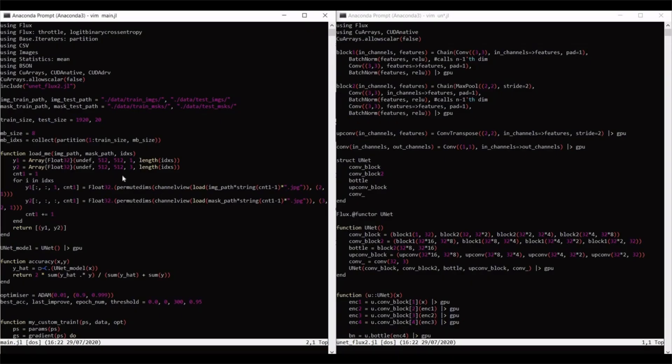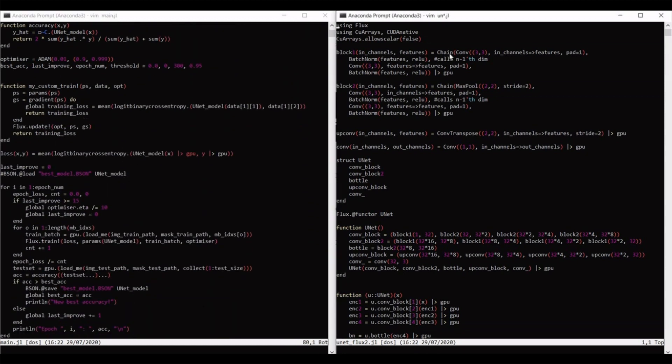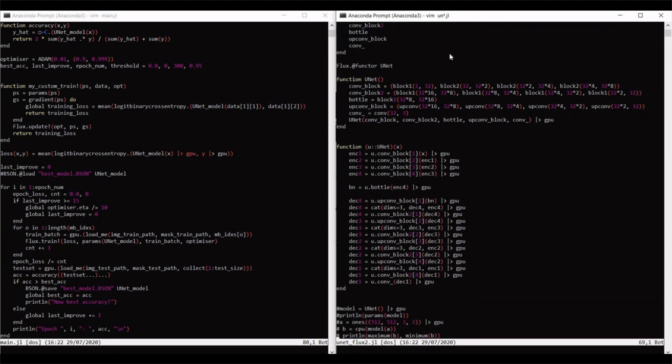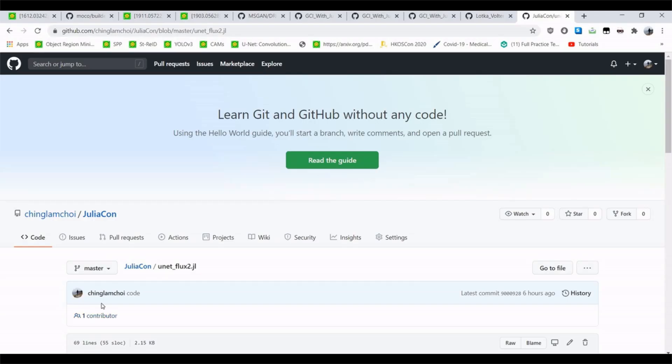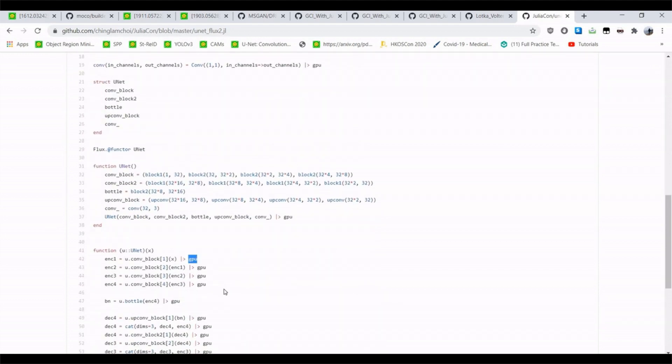In terms of implementation, here is my code. Although I did have quite a bit of trouble initially adapting to using structs to implement the custom connections and bottlenecks of UNET, and with some debugging issues relating to GPUs, with the Discourse help I did manage.